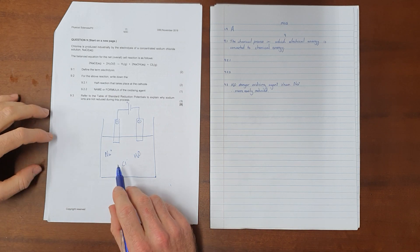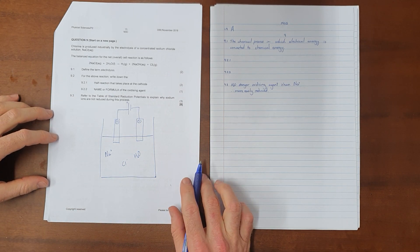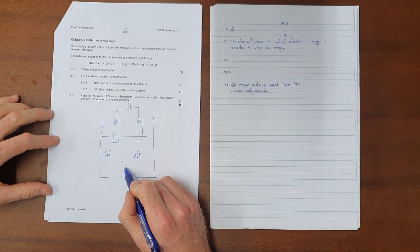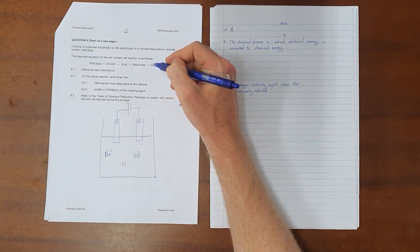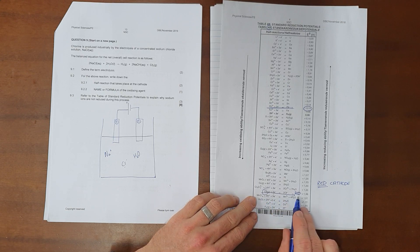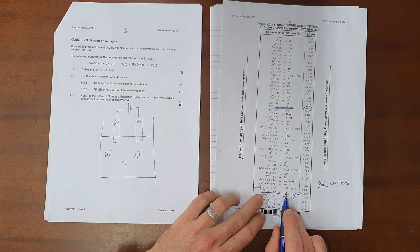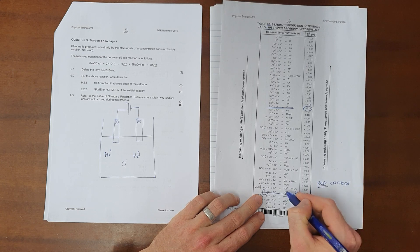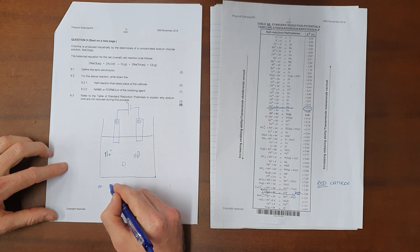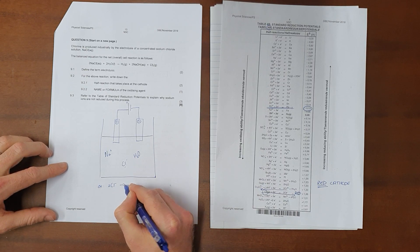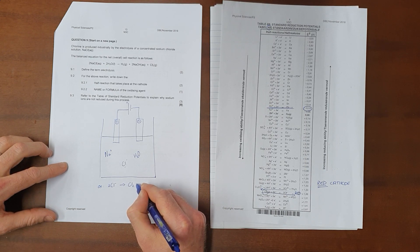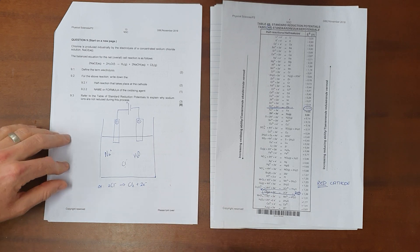Now there are a number of possible half reactions that can take place here. The first one is that we can see that if we're starting with chlorine ions and ending with chlorine gas, then the only possible half reaction that can be happening there is going to be the oxidation of chlorine, which we can write out as oxidation, where we start out with two chlorine ions, and those then are oxidized, meaning they lose electrons to form chlorine gas, and then give off those two electrons.